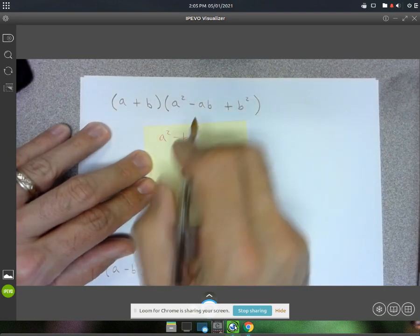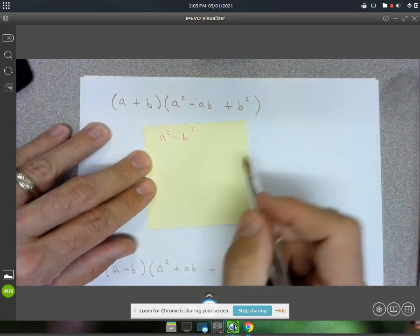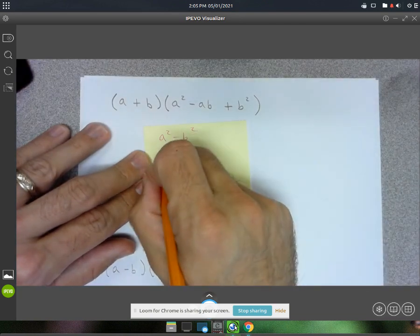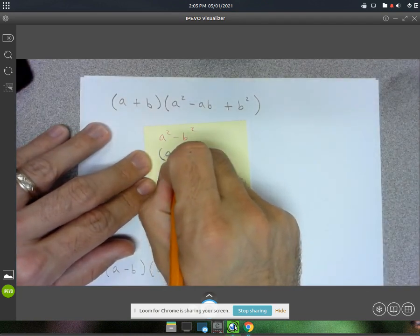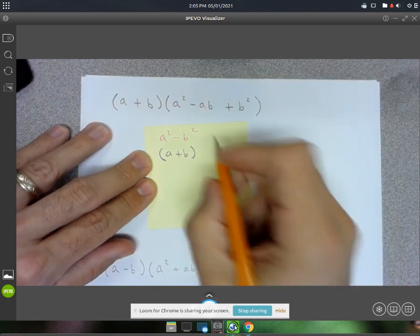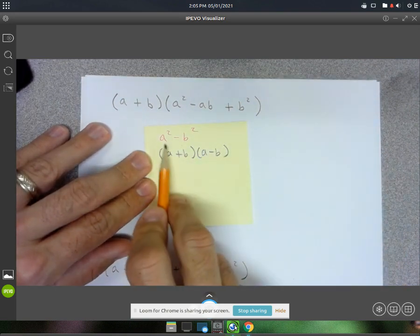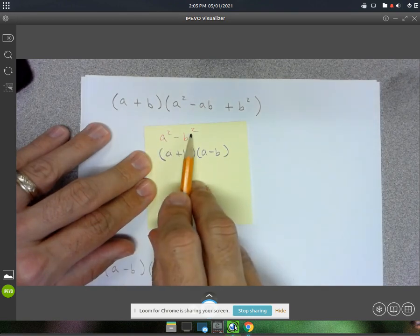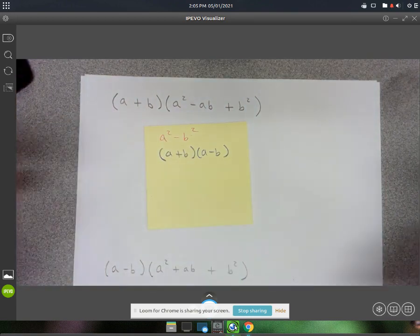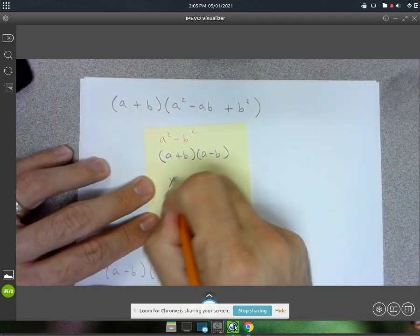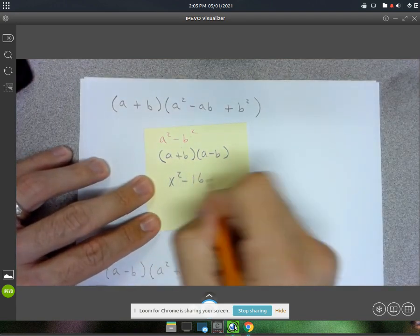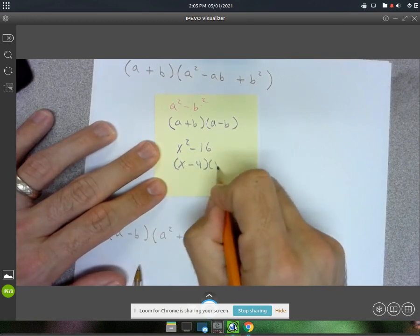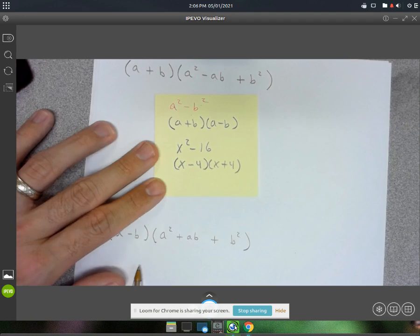If you had two perfect squares and you were subtracting them, this would factor into a plus b and a minus b. You take the square root of each term. The square root of b² is b. So you could apply that to something like x² minus 16, and we would write that in factored form as (x - 4)(x + 4).